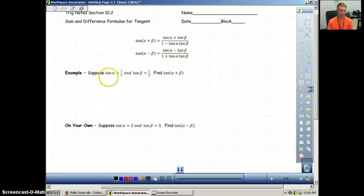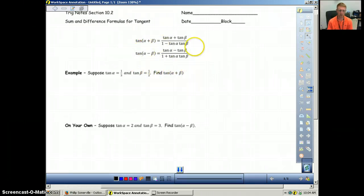It's telling us that we have the tangent of alpha equals one-third and the tangent of beta equals one-half. So find tangent of alpha plus beta. In this case we need to know what our formula is. So we'll just start replacing what we know. The tangent of alpha equals one-third and then the tangent of beta equals one-half.